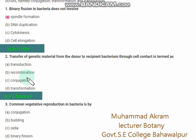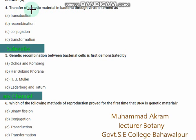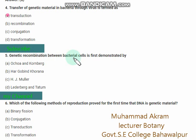Common vegetative reproduction in bacteria is by binary fission. The transfer of genetic material in bacteria through a virus is termed as transduction — the right option is option A. The genetic recombination between bacterial cells was first demonstrated by Lederberg and Tatum — the right option is option D.